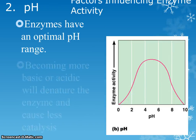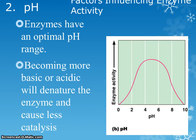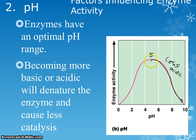Another way to influence enzyme activity is through pH — how acidic a substance is. This enzyme seems to work really well at around a pH of 5. If you become less acidic or more acidic, the enzyme won't work as well. Enzymes are very particular — they need a certain pH range in order to be effective.